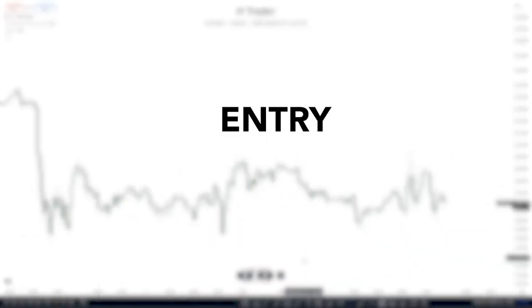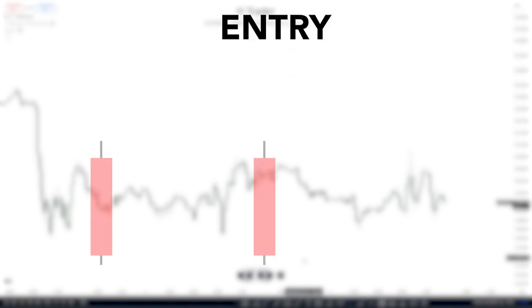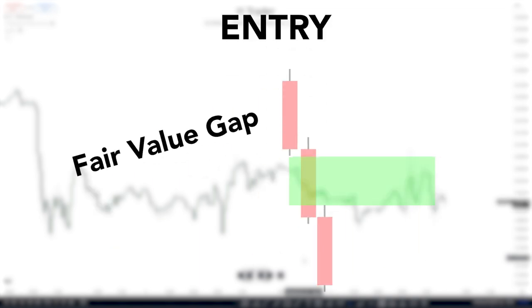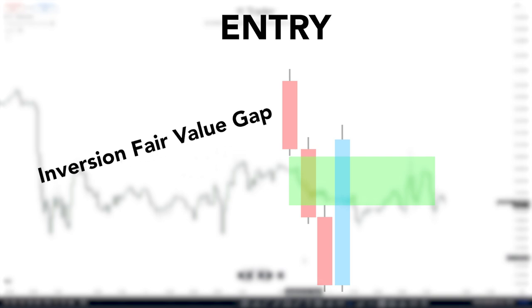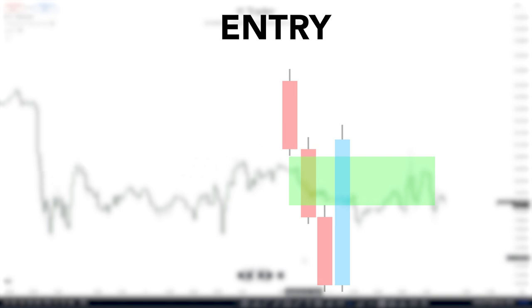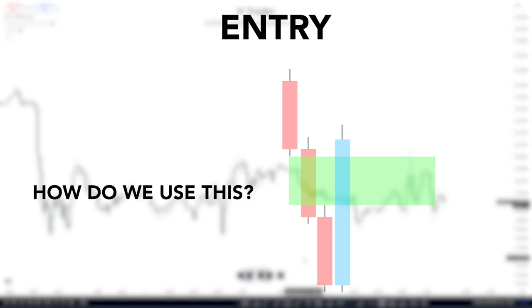We're going to start off with the entry. The concept under this category we can identify by looking at three candles which form a gap in between, and that is called a fair value gap. Then we want one candle to close above the fair value gap with the body, creating what is called an inversion fair value gap. That is our first concept, which is pretty simple.